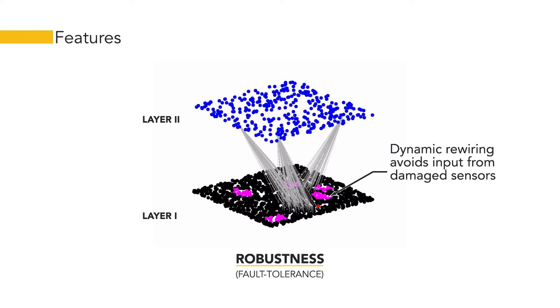We found that random damage of sensors in the input layer did not check the process of self-organization and the pooling network continued to emerge.